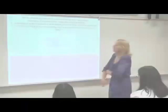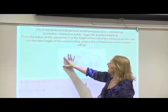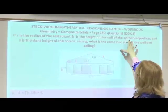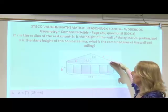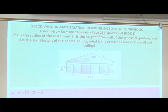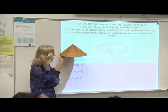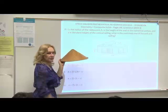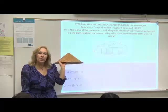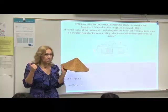This is a good example. If R is the radius of a restaurant, H is the height of the wall of the cylindrical portion, and S is the slant height of the conical ceiling, what is the combined area of the wall and ceiling? I am talking about surface area, the ceiling of your restaurant, and you have a cylindrical part. So this is a composite. You don't have a formula for a shape like this, so you need to break it down into two formulas that you do have.